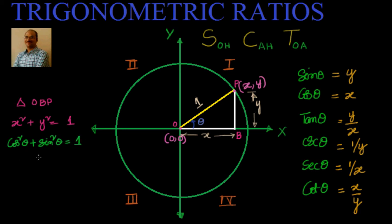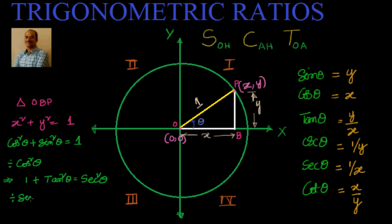This is how we got the first trigonometric identity. Now to get the second one, simply divide this whole equation by cos squared theta — I will get 1 plus tan squared theta equals secant squared theta. And also, if I divide by sin squared theta, I will get cot squared theta plus 1 equals cosecant squared theta.